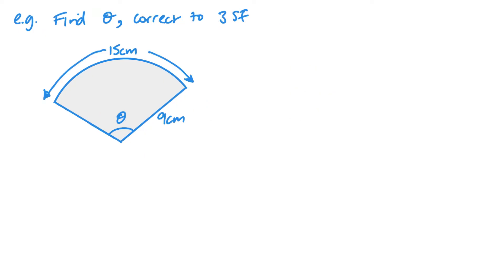Second example, another straightforward one. Remember L equals r theta. L is 15 in this case, r is 9 and then we have theta. So theta is going to be 15 divided by 9. Again to 3 significant figures, this will give me 1.67 radians.